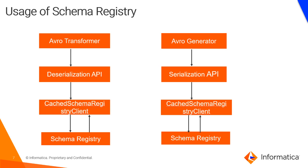Similarly, on the target side, an Avro generator calls the serialization API when generating Avro data. This serialization API checks the cached schema registry client for the schema version. If it is a different schema version, it calls the centralized schema registry to get the correct schema version. Once retrieved, the Avro data is generated using the serialization API.